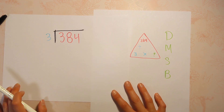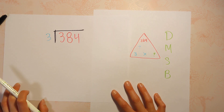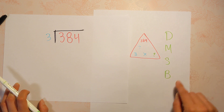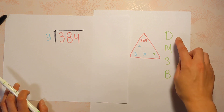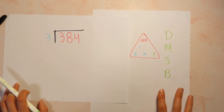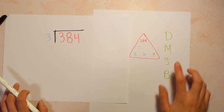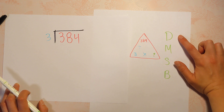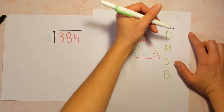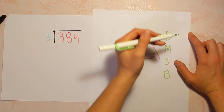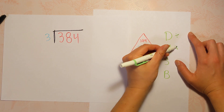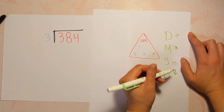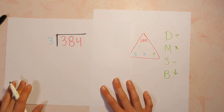We are going to follow the standard algorithm — it's quicker, and it has these steps. Does McDonald's serve burgers? Here's what that stands for: Divide, Multiply, Subtract, Bring down. And those are our steps.